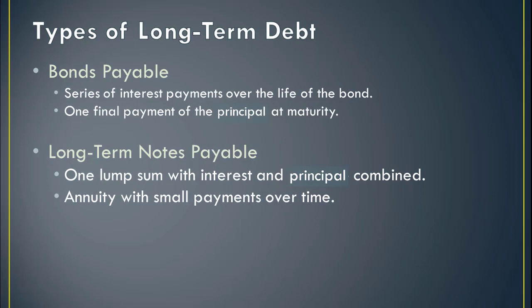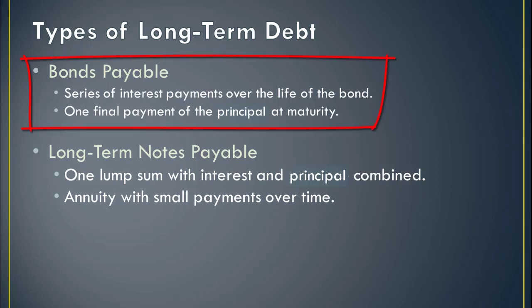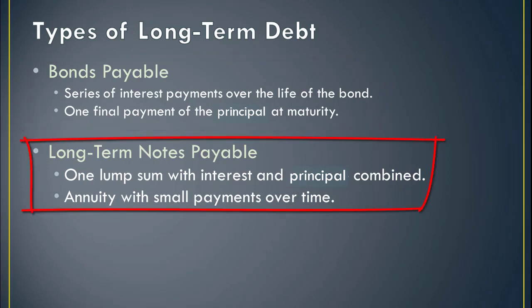Now it's time to talk about some specific examples. Although I wish we could talk about all the different kinds of long-term debt, we're going to restrict our discussion to just two: bonds payable and long-term notes. We've talked about both of these before from an asset standpoint — what happens when we invest and buy a bond, what happens when we decide to loan money to somebody else. But now we're talking about the flip side. We are borrowing the money. From our perspective, bonds mean we're going to make a series of interest payments and then a big lump sum payment at the end. Long-term notes payable mean that we will get the money now, accrue interest, and make one huge payment at the end that includes all the principal and all the interest.